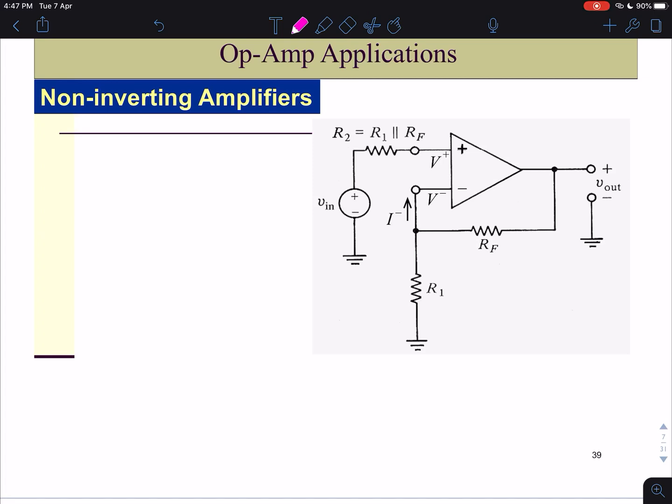From the output here, the current goes through RF and then it goes to R1 to the ground.